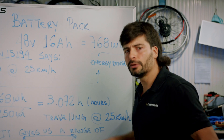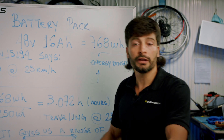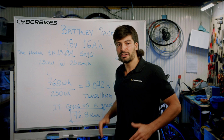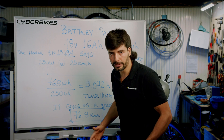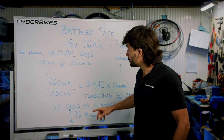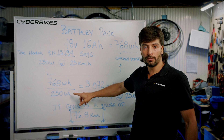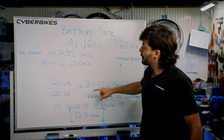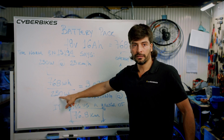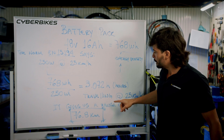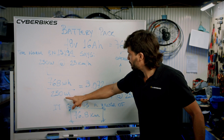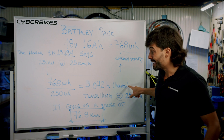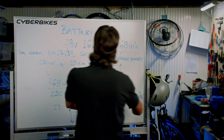"Oh Felipe, you are ignoring the losses!" Yes — you know why I'm ignoring them? Because you have legs and you can pedal the bike. We are only considering the controller draining the battery pack at 250 watts. Divide energy density by 250 watts and we get 3.072 hours.